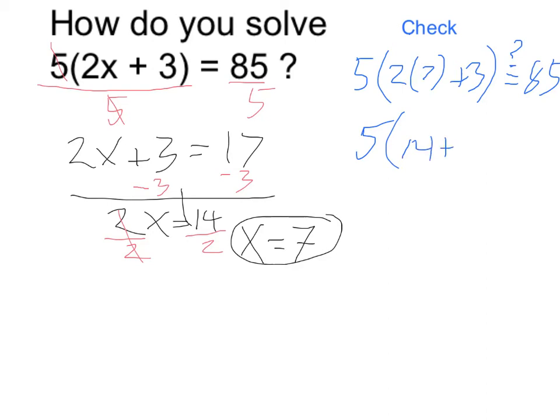so that's 5 times 14 plus 3, which equals 5 times 17, and 5 times 17 is in fact equal to 85, so it does work out.